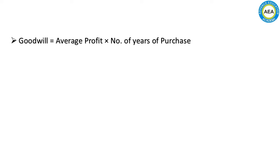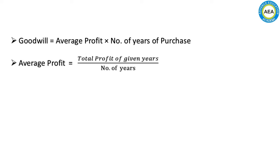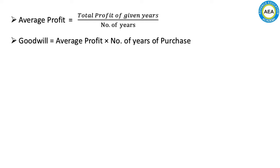The formula for goodwill under the average profit method is: Goodwill = Average Profit × Number of Years of Purchase. And Average Profit = Total Profit of Given Years ÷ Number of Years.